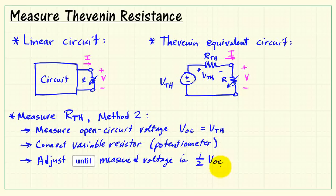Adjust the potentiometer until the measured voltage is one-half of your earlier measured open circuit voltage. Why one-half? Why is that significant?